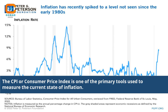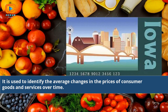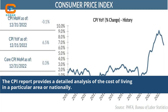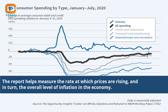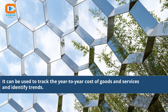The CPI, or Consumer Price Index, is one of the primary tools used to measure the current state of inflation. It is used to identify the average changes in the prices of consumer goods and services over time. The CPI report provides a detailed analysis of the cost of living in a particular area or nationally. It reflects the current state of inflation by providing an estimate of what it takes to purchase specific goods and services. The report helps measure the rate at which prices are rising and the overall level of inflation in the economy. It can be used to track the year-to-year cost of goods and services and identify trends.